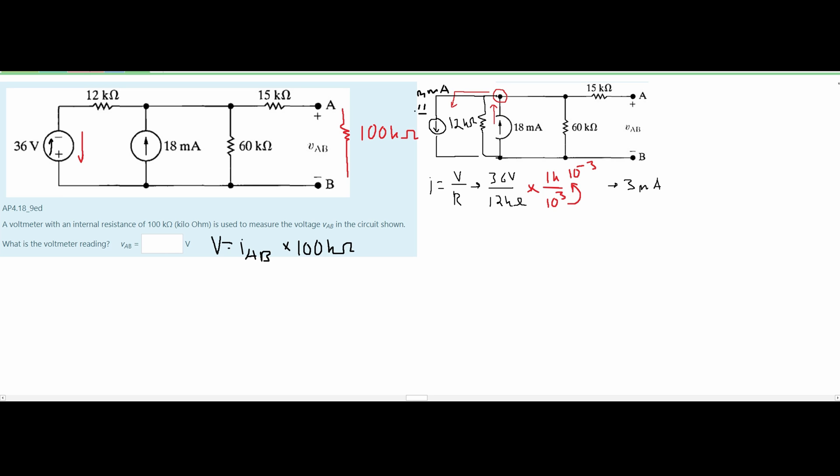So what we can do is since these are both going to the same node we can add them together. When we add them together we're going to get 15 milliamps and since our 18 milliamps is greater we're still going to be going in the upwards direction.